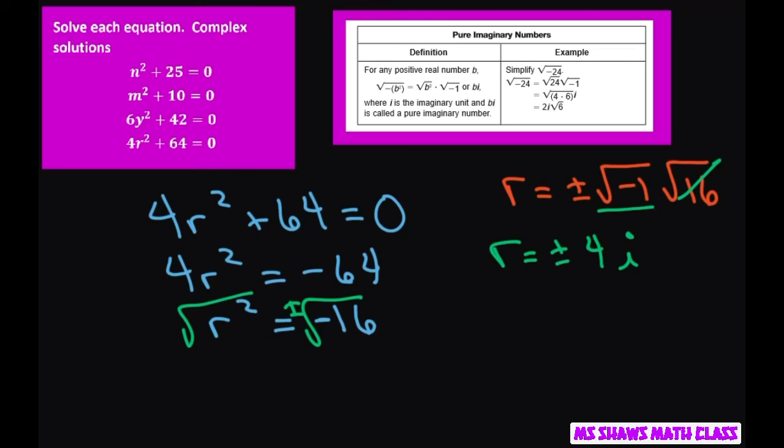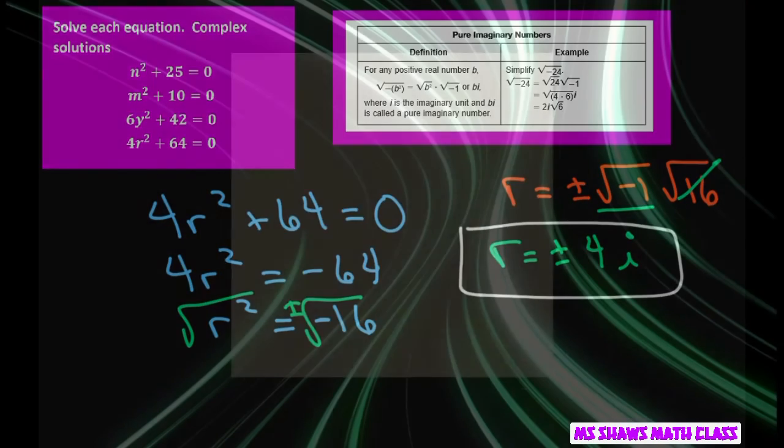The i usually goes in front of a radical, but if you have a constant, you put it after the constant. So that's just by convention. And that's it. Thank you. Have a nice day. Bye-bye.